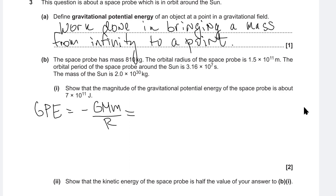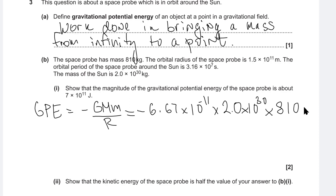We have all the data available, so we're going to write minus 6.67×10⁻¹¹ multiplied by the mass of the Sun, which is 2.0×10³⁰, then multiplied by the mass of the space probe, which is 810 kilograms. We divide that by the orbital radius, which is one astronomical unit — around 1.5×10¹¹.